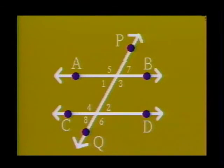Angles lying outside of the two lines and on opposite sides of the transversal are called alternate exterior angles. There are two pairs of alternate exterior angles: angles 5 and 6, and angles 7 and 8.